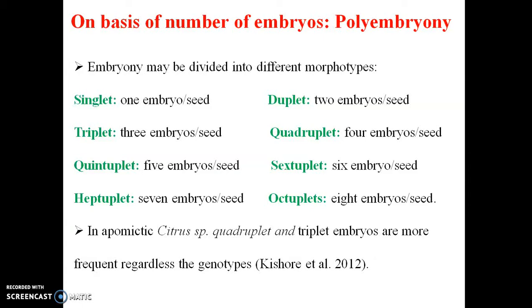Polyembryony can also be classified by the number of embryos per seed: singlet means 1 embryo per seed, doublet means 2, triplet means 3 embryos per seed, quadruplet means 4 embryos, and quintuplet means 5 embryos per seed, while sextuplet means 6 embryos per seed.